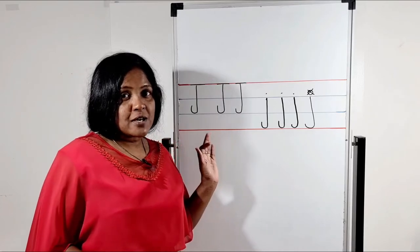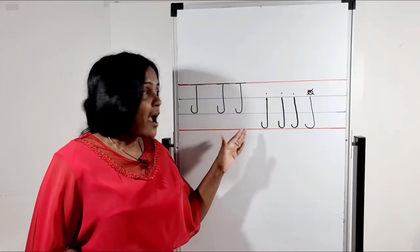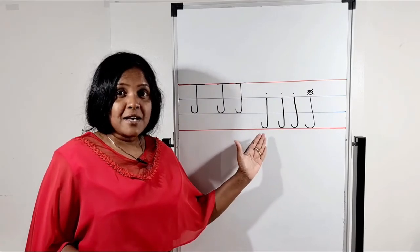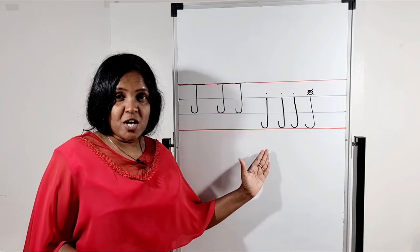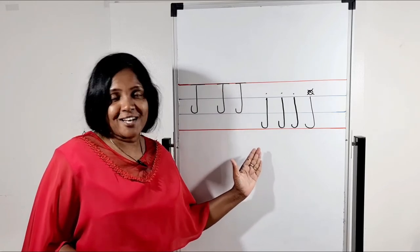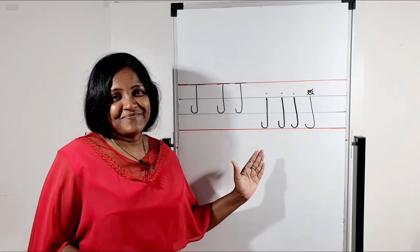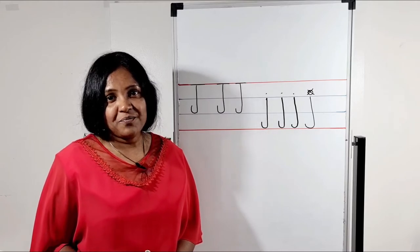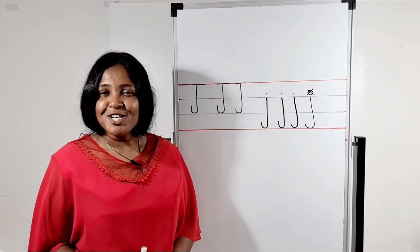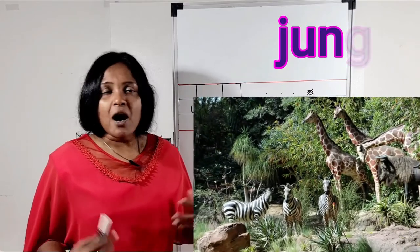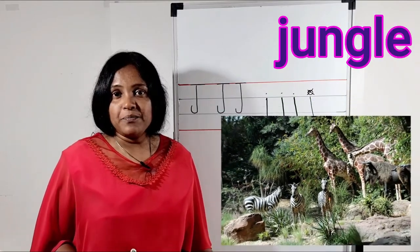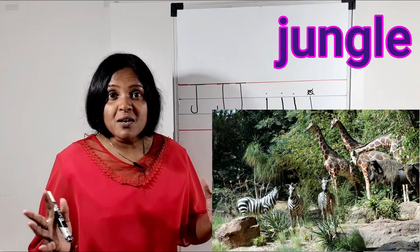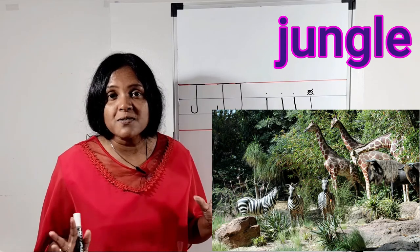Now we know how to write uppercase J and lowercase J. Lowercase J we can call as small J, baby J, simple J, lowercase J. Now we'll see what are the words touched with letter J. Number 1. Jungle. Jungle means undeveloped land area. It's a scary area. We can see lot of trees and wild animals inside the jungle.